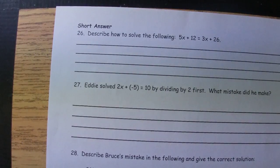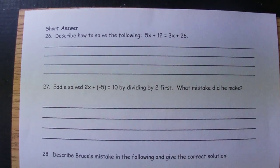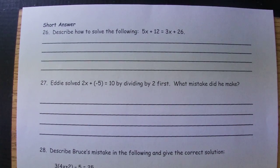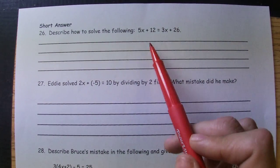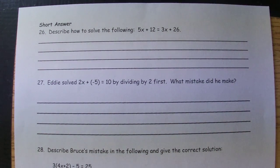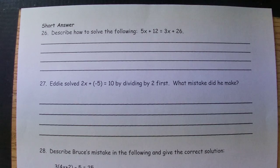Then the last page we went over in class today, but just some pointers. 26, you should be including something about getting the variables together by using the opposite signs, getting the constants together by maybe subtracting 12, and then undoing multiplication with division. You should be writing sentences. You should have descriptions.